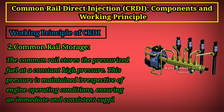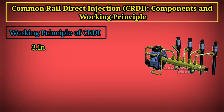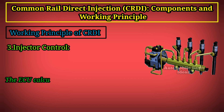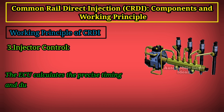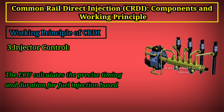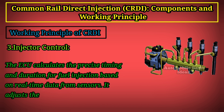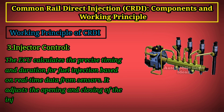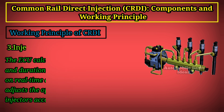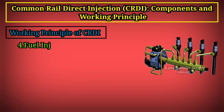This pressure is maintained irrespective of engine operating conditions, ensuring an immediate and consistent supply of fuel. Step 3 — Injector Control: the ECU calculates the precise timing and duration for fuel injection based on real-time data from sensors. It adjusts the opening and closing of the injectors accordingly.